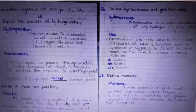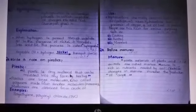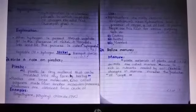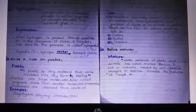Next question: Write a note on plastic. Answer: Plastic is any material that can be molded into any form by heating. Plastics are large molecules, also called polymers, which are made from small molecules called monomers. Monomers are obtained from crude oil. Examples are polyethylene and polyvinyl chloride.